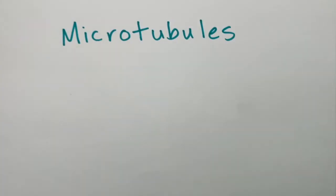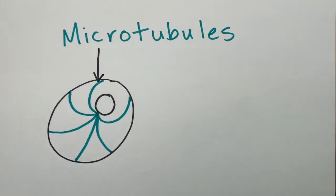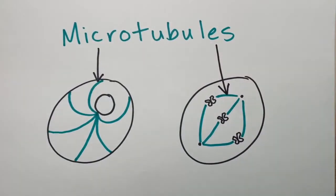Microtubules are large polymers with many essential functions, from maintaining the structure of the cell to separating duplicated chromosomes during mitosis.